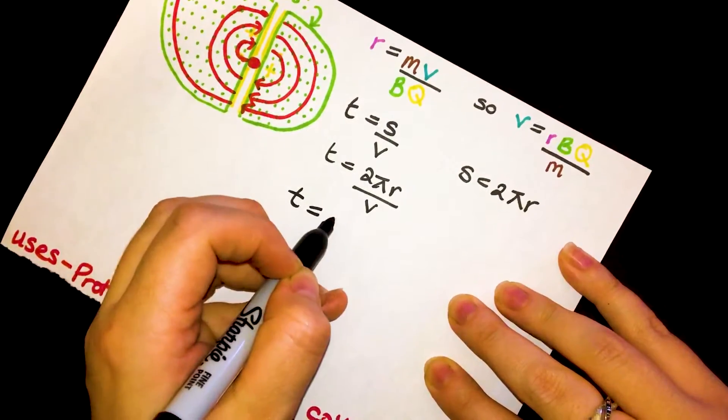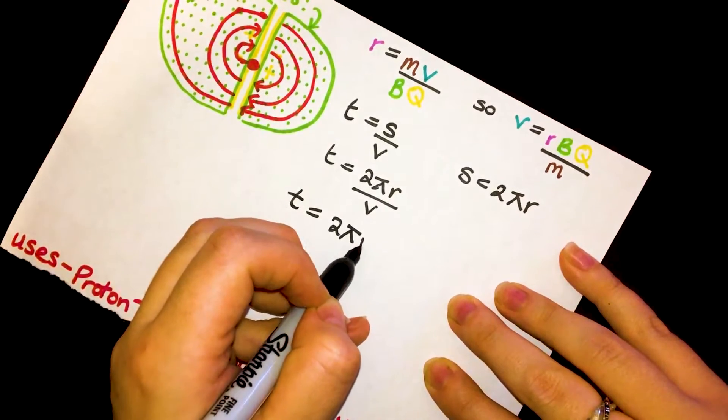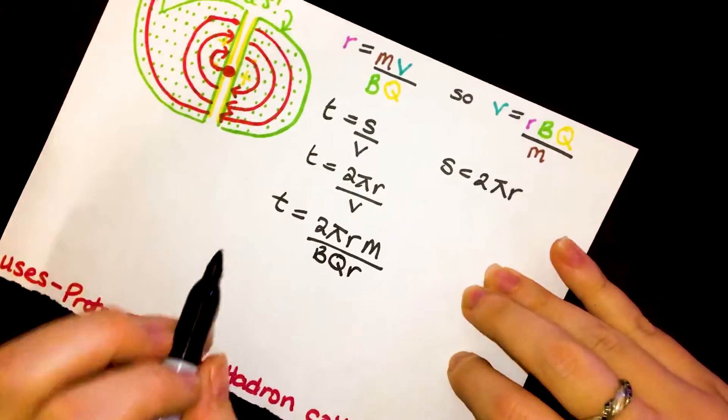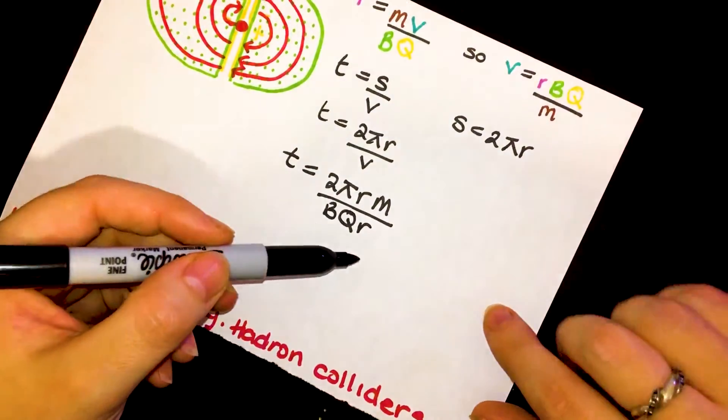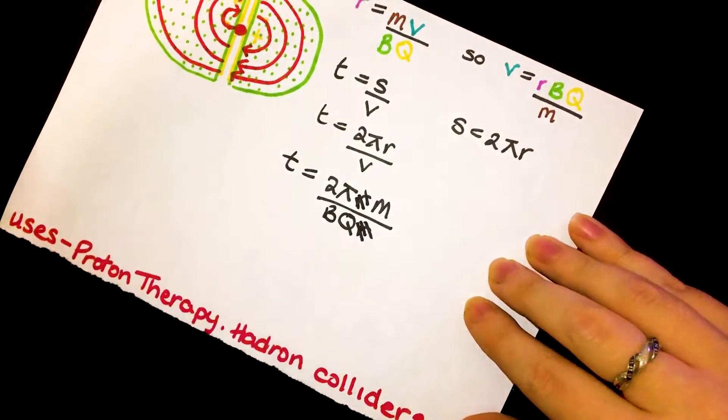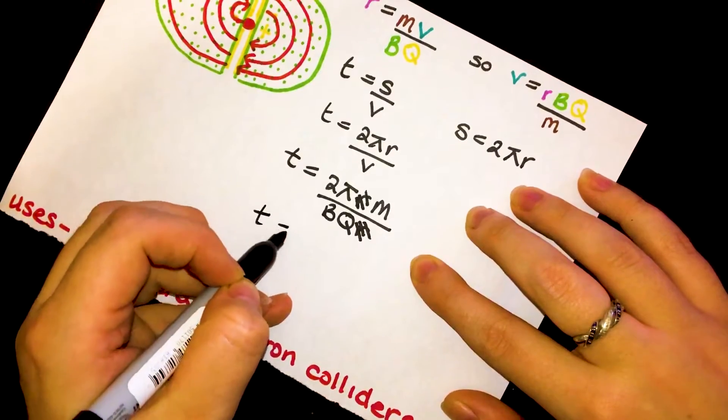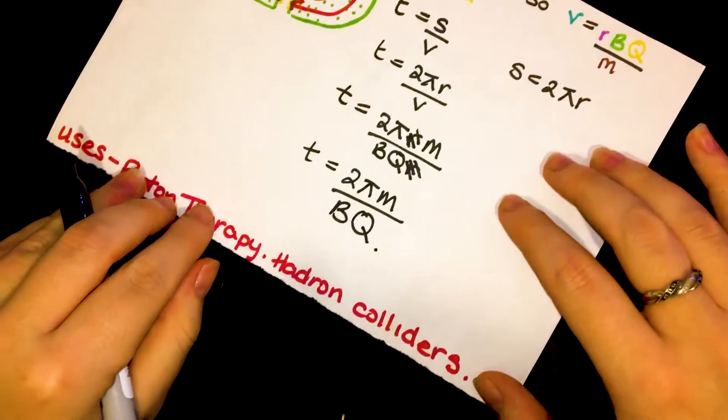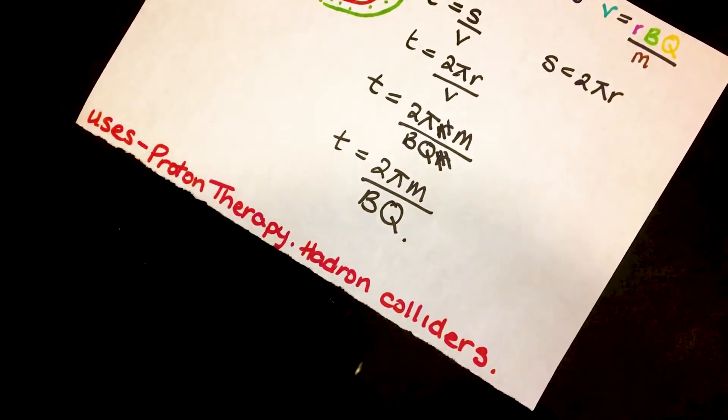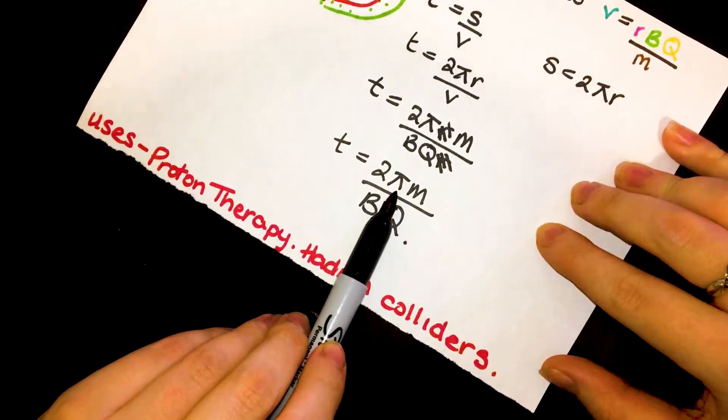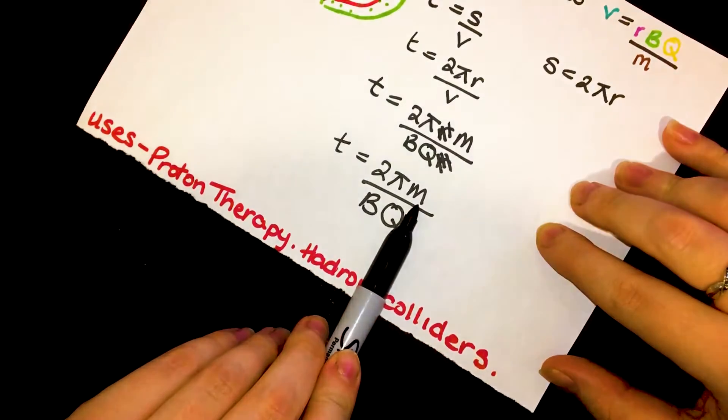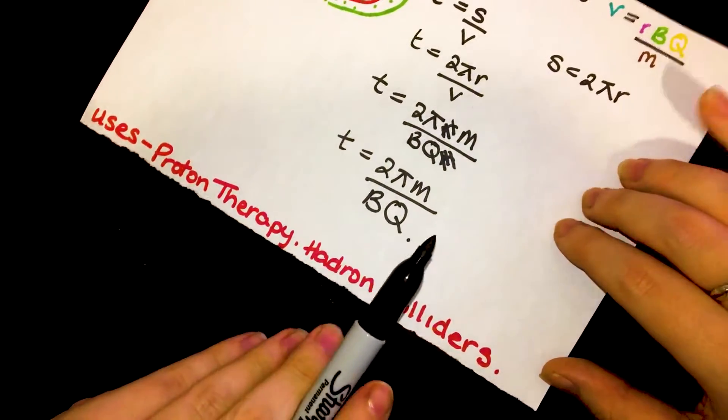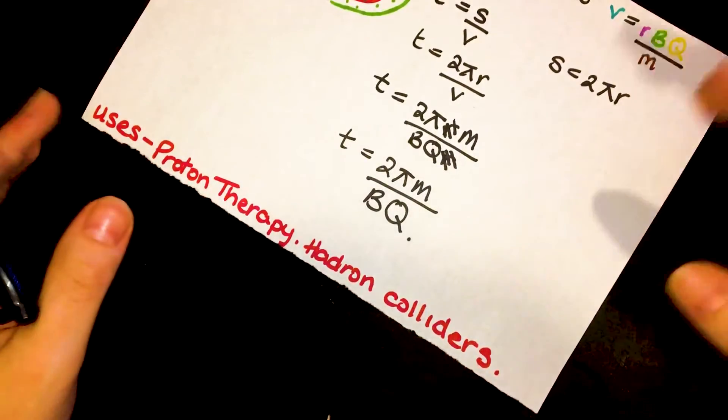Now we've got two like terms, one on the top, one on the bottom, so we can substitute these guys out, which means our equation that we get at the end is this. Which, thinking about that, is actually amazing, because 2 pi, these are constants, we can't change them. The mass of our proton can't change, the field it's in can't change, and the charge can't change. So time is completely independent of the radius in which it's going in.